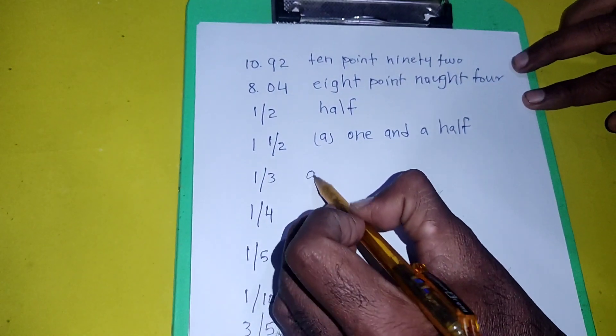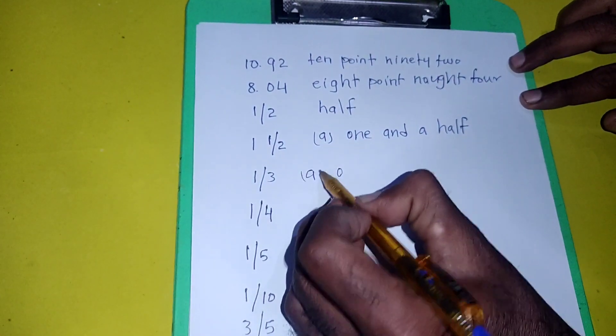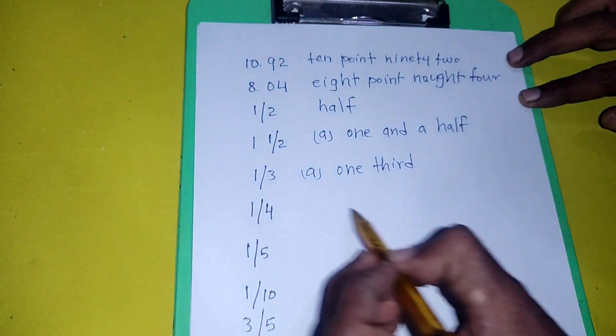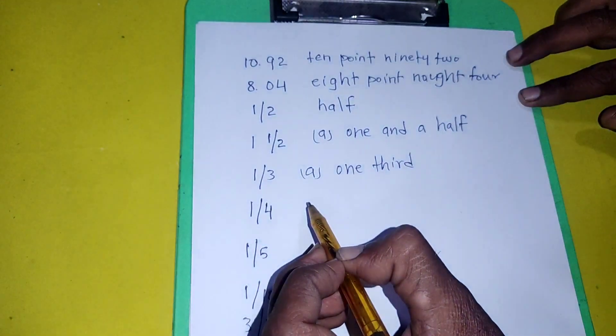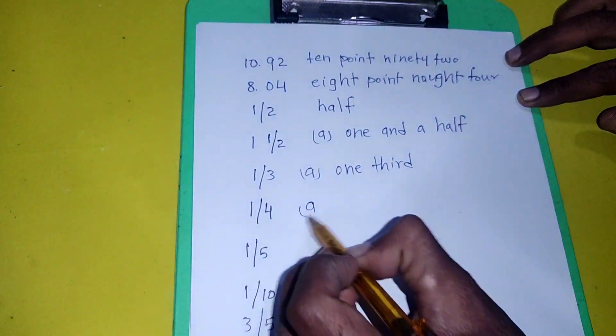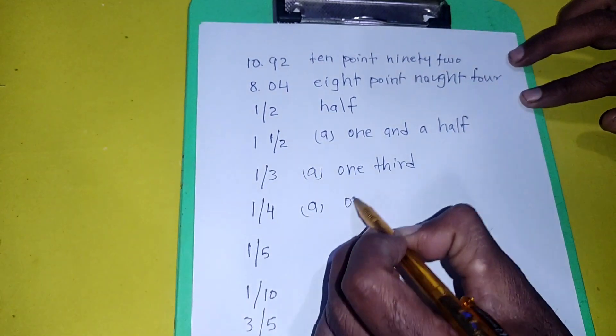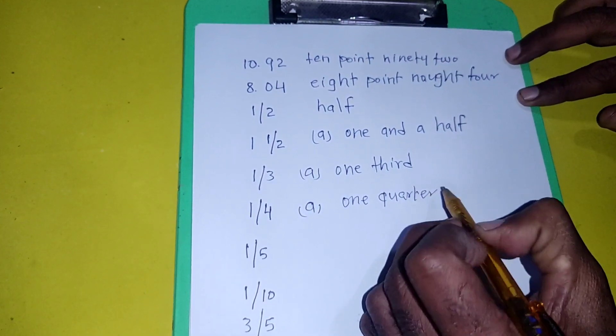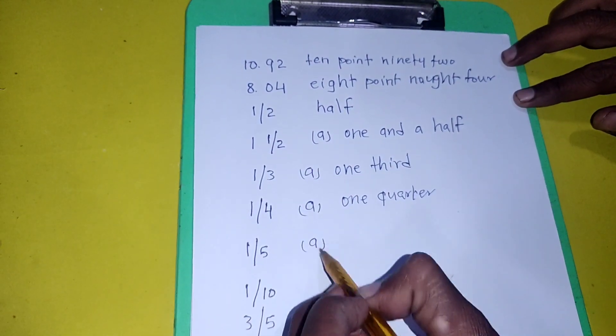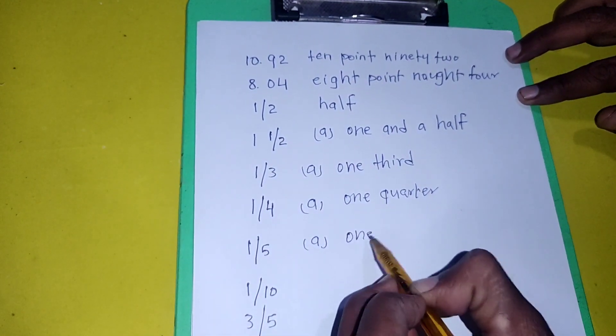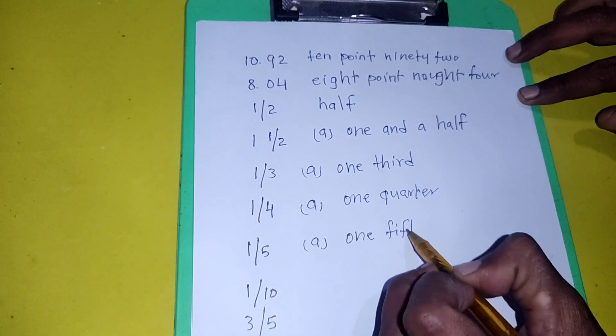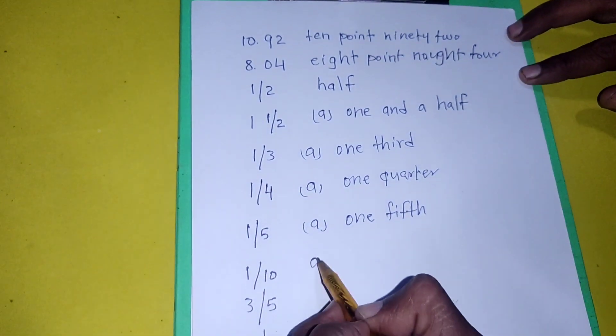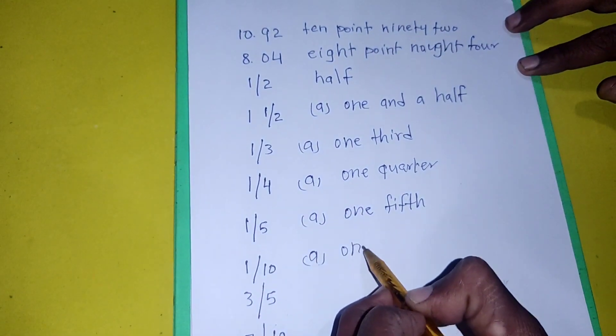A third, or one third. A quarter. We could also write one quarter. A fifth, or one fifth. A tenth. We could also say one tenth.